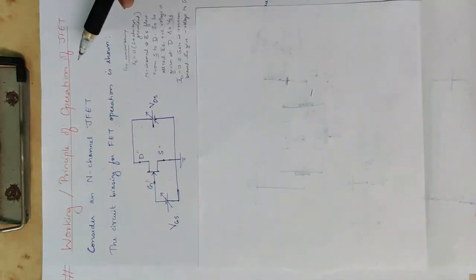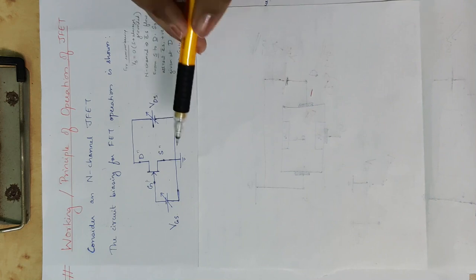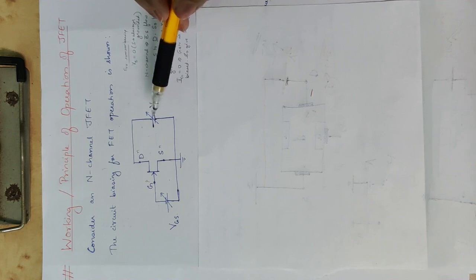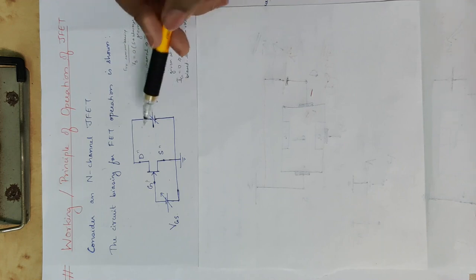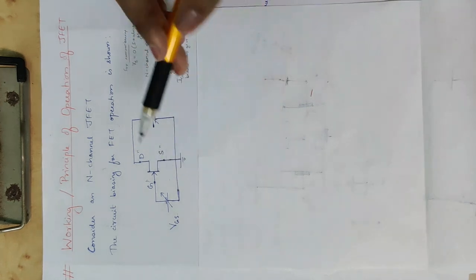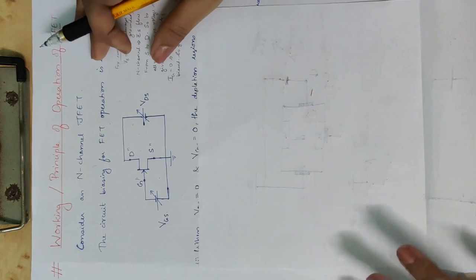Working on the principle of operation of J-FET. Now we call this biasing — that's how we connect the battery. We are varying the voltage across the drain-source.